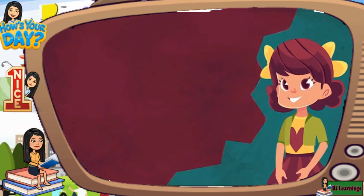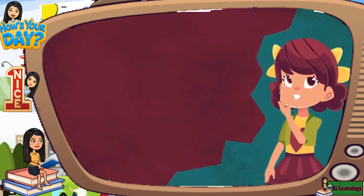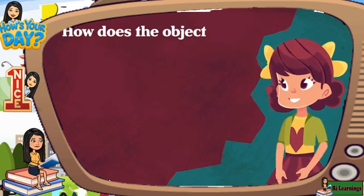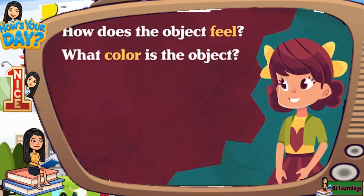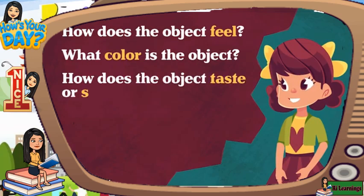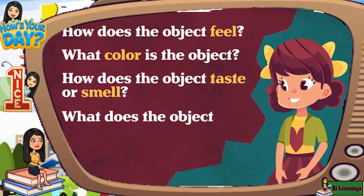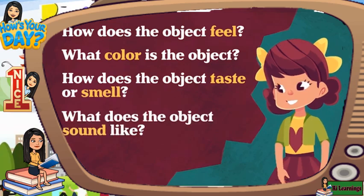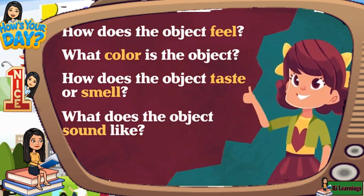When you are making observations, try asking yourself questions that relate to your senses. How does the object feel? What color is the object? How does the object taste or smell? What does the object sound like? These are all great questions to ask yourself. Making observations is a useful skill that can help you describe objects by their characteristics.